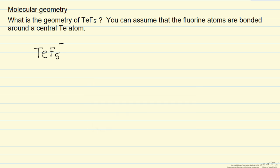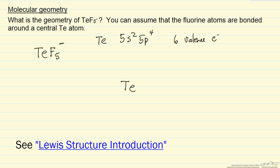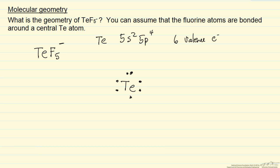First, from the periodic table, chlorine has 7 valence electrons, and we are going to add one more because of the negative ion charge. In the Lewis structure, we have fluorine with 7 electrons, and likewise for the other fluorines.